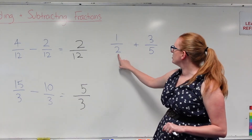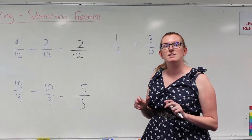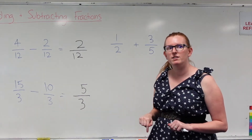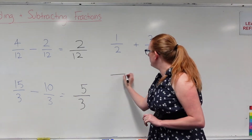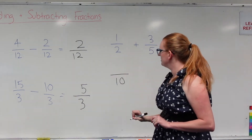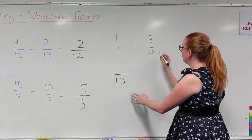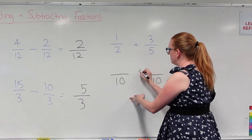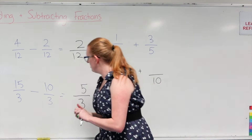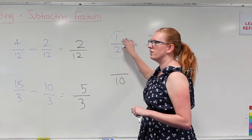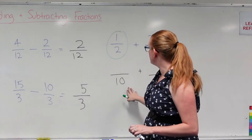What we're going to do is find a number that both denominators fit inside. So we're looking for a number that 2 and 5 both fit into. The best number I can think of is 10, because 2 fits inside 10 and 5 fits inside 10 equally. So I want to turn this fraction into a fraction over 10, and I want this one to also be a fraction over 10. So I need to turn 1/2 into an equivalent fraction over 10.